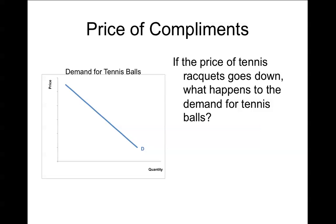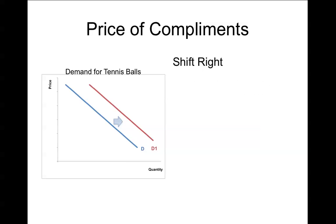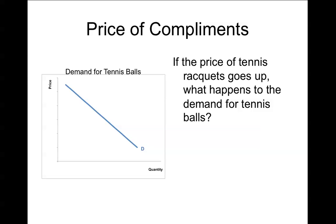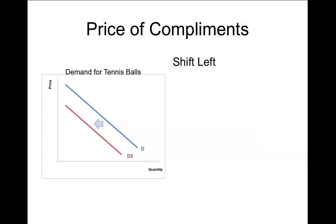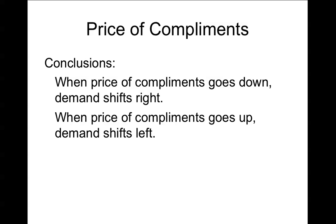The next determinant is price of complements. Using tennis balls and tennis rackets: if the price of tennis rackets goes down, people who couldn't previously afford a racket can now play, so more people demand tennis balls at any given price — the demand curve shifts right. If the price of tennis rackets goes up, fewer people can afford to play, so demand for tennis balls falls and the demand curve shifts left. Summary: when the price of complements goes down, demand shifts right; when it goes up, demand shifts left.